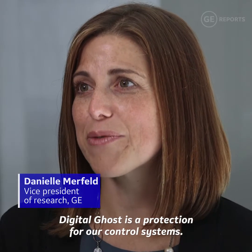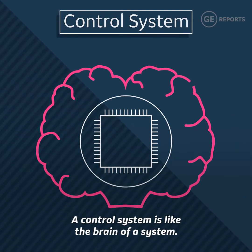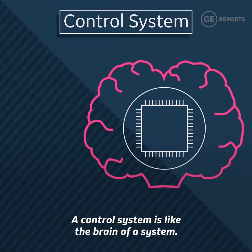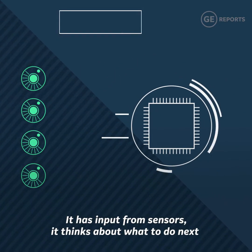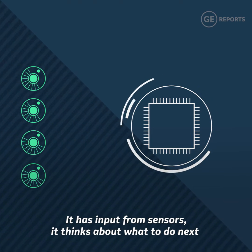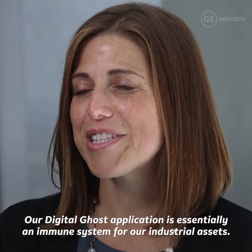Digital Ghost is a protection for our control systems. A control system is like the brain of a system — it has input from sensors, it thinks about what to do next, and it makes the change happen.